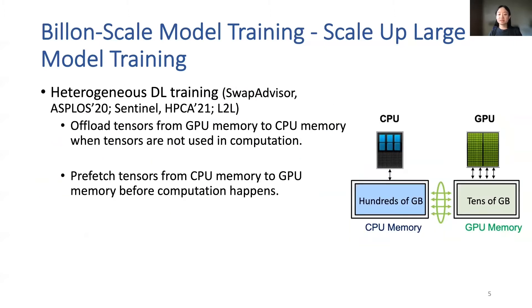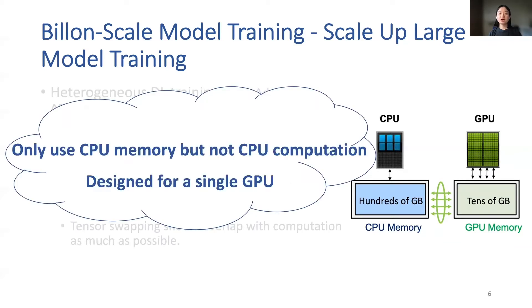Existing works also try to scale up large model training. Heterogeneous deep learning training is a promising approach to reduce GPU memory requirements by exploring CPU memory. Specifically, they offload tensors to CPU memory when not in use and prefetch them before computation. However, all existing efforts explore CPU memory but not CPU compute, which we find can significantly reduce communication overhead between CPU and GPU. Besides, they are mostly designed for a single GPU without a clear path to scaling efficiently on multiple GPUs, which is crucial for large model training.